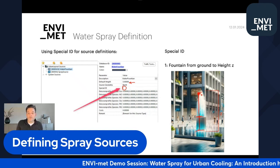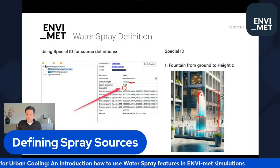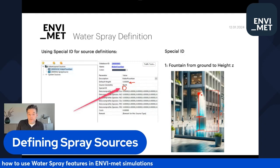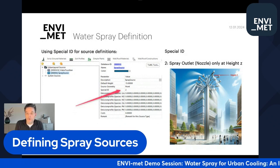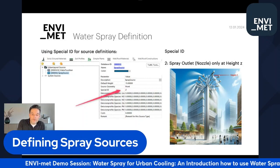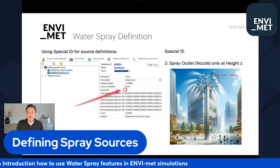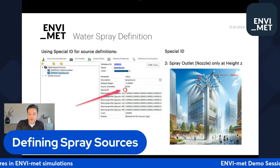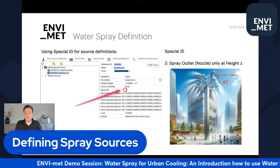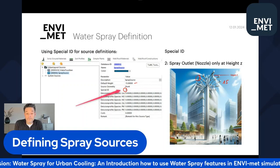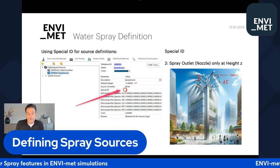The other option — and you can mix both in the model, having as many sources as you like — is a classical spray outlet or nozzle, identified by setting the special ID to the value of 2. This means it's not a fountain but some kind of sprayer located at a specific height — 15 meters in this example. There is just the nozzle at that height emitting the water spray. At first it seems a bit confusing, but very soon you'll find it's very easy to do.